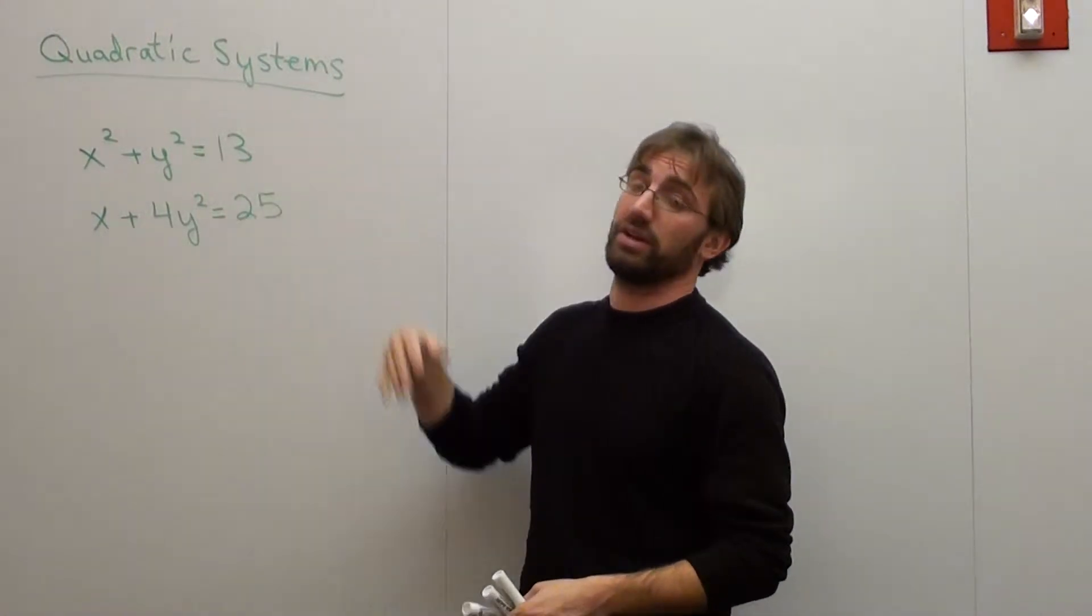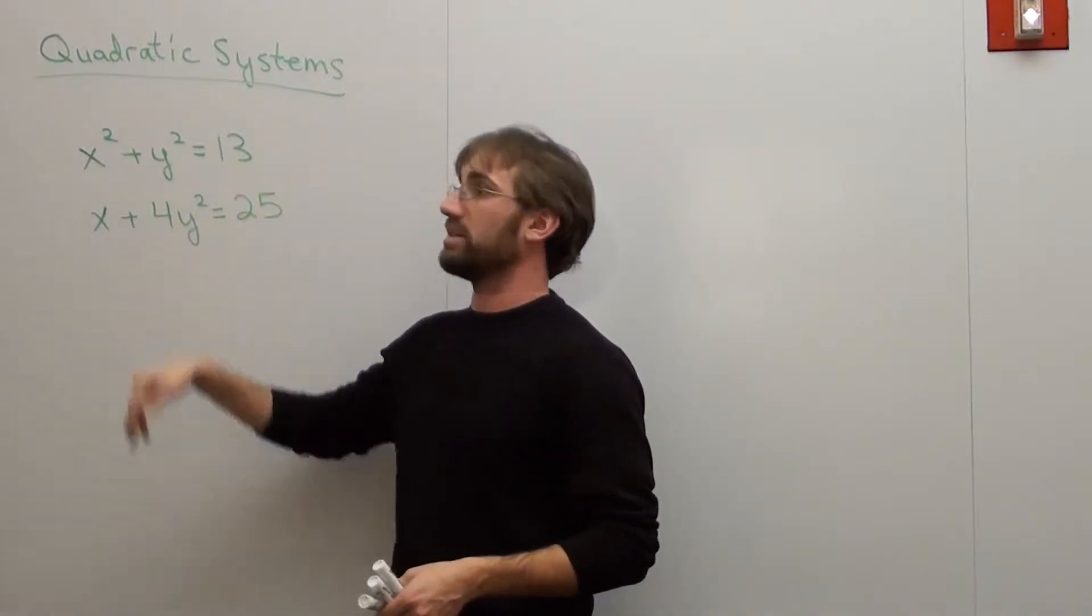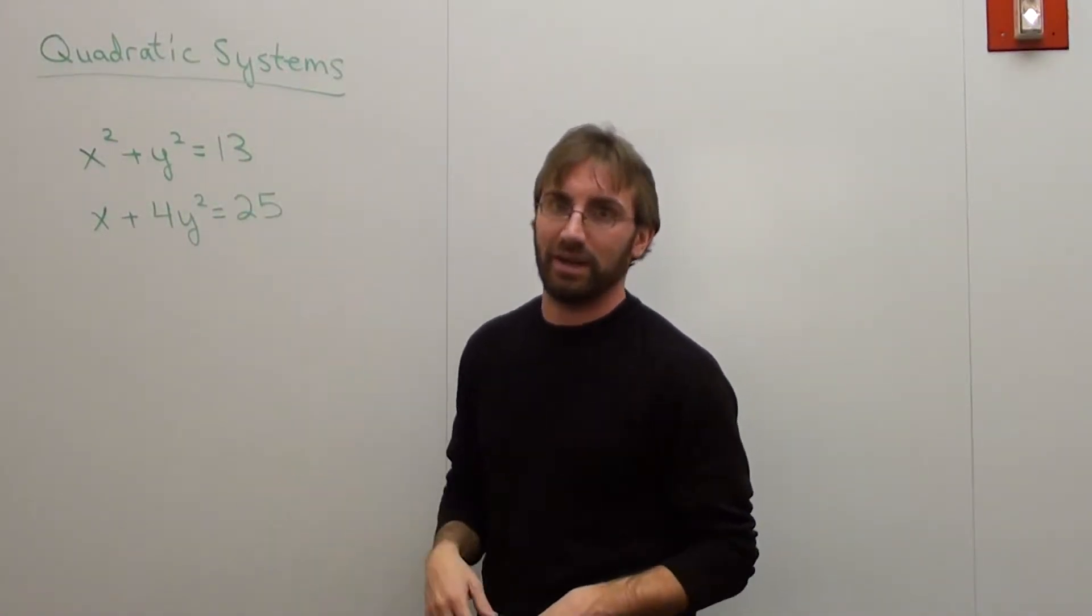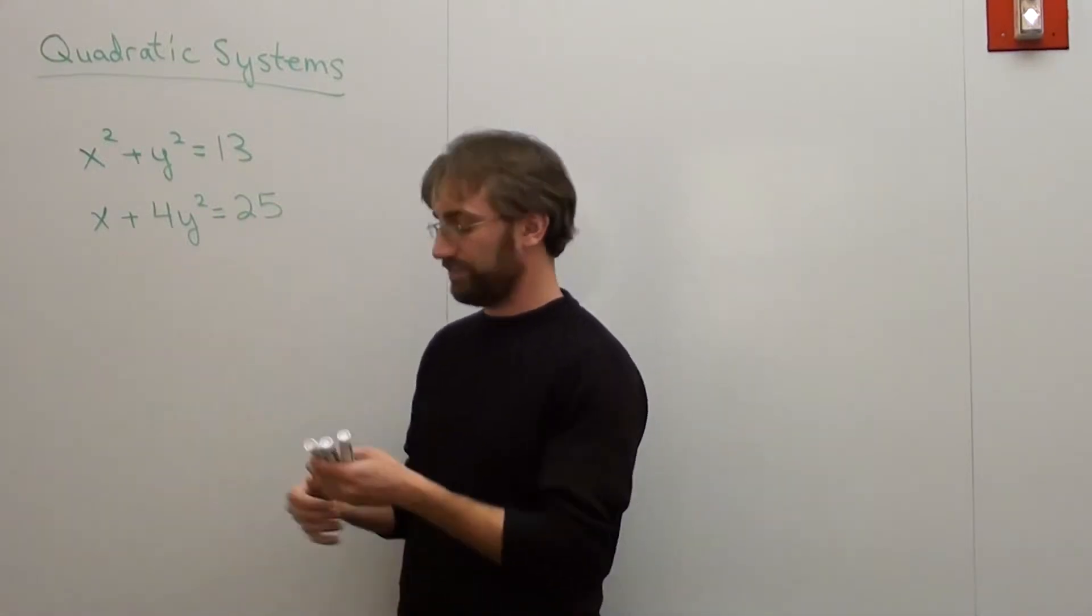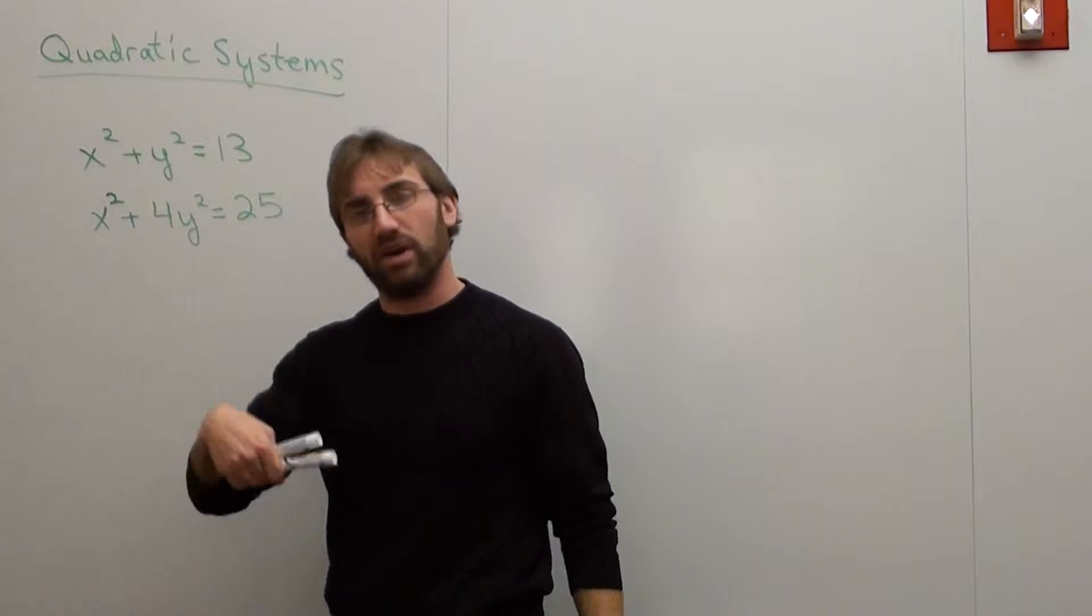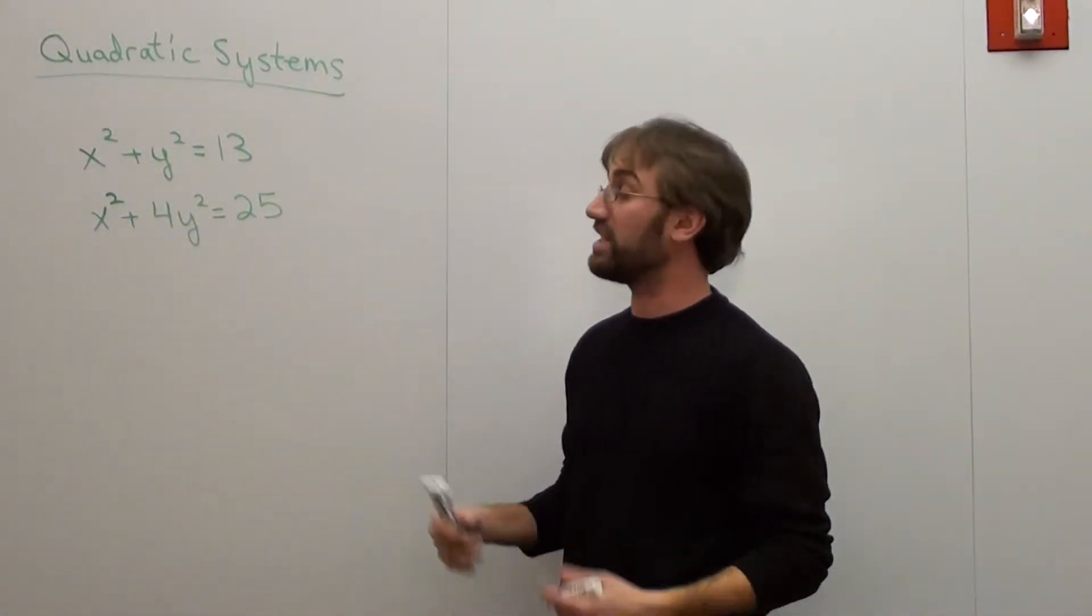This first equation right here is a circle. I know it's a circle because the centers are there, the radius is the square root of 13. I don't know what that is off the top of my head. And this one is now a quadratic system. It's x squared plus 4y squared equals 25. It's an ellipse.